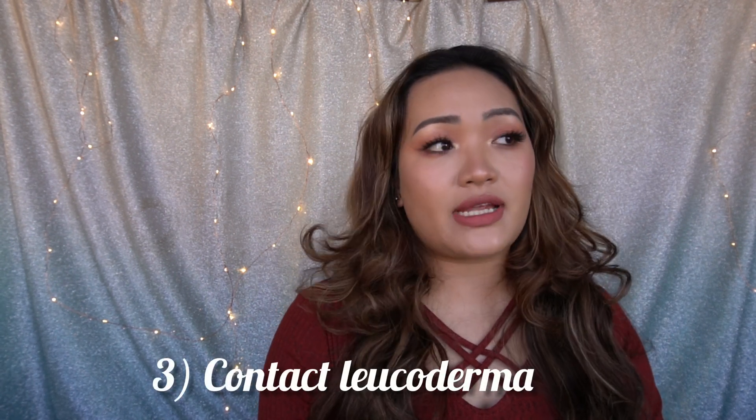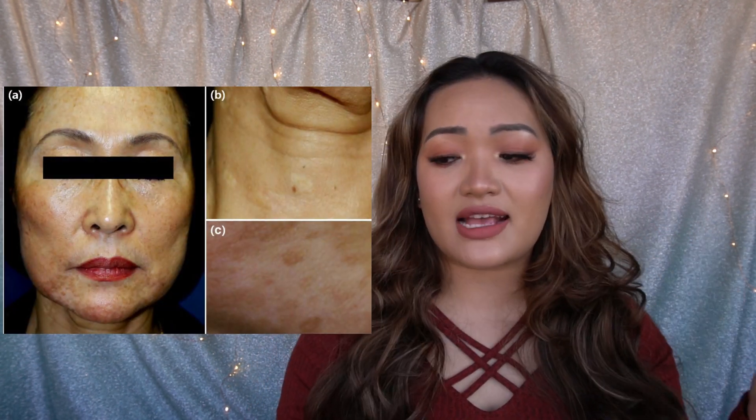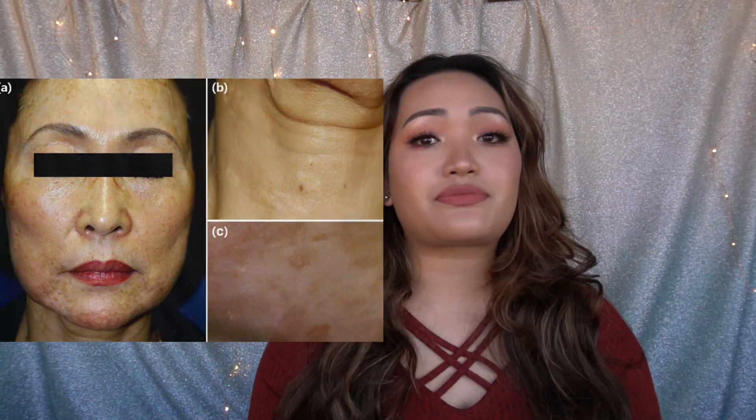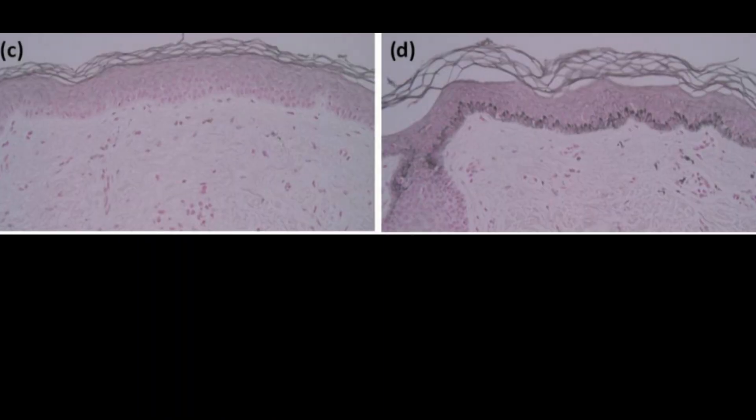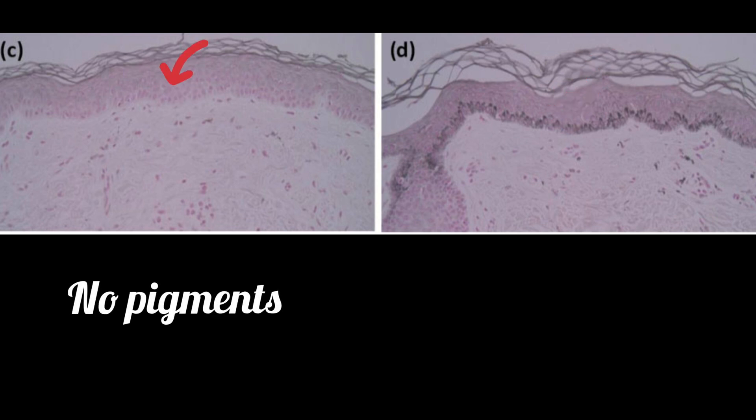The third reported side effect is contact leukoderma — leuko means white, derma means skin, so the skin becomes white. But it's not that your whole skin becomes fair; it's patchy and not nice. As you can see in the picture, this lady used to apply lemon juice on her face and there is patchy loss of pigmentation. They took a biopsy from the face and the forearm to compare histopathology. Under the microscope, the right side has melanin — the pigment — while the left side has none.